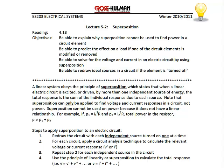What are the steps to apply superposition? The first thing you do is to redraw the circuit with each independent source turned on one at a time. So if you have two independent sources, that's two different circuits; if you have three, that's three, and so on.